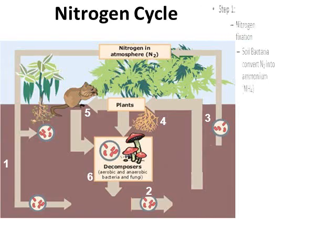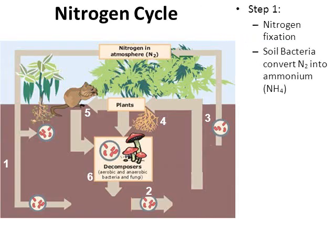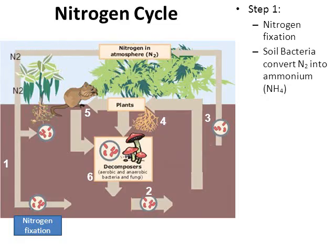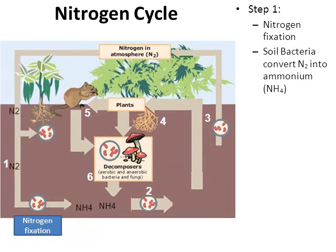Let's go ahead and look at the cycle now. Step one — I broke this down into six different areas in the picture. In area one, step one, bacteria are going to do a process called nitrogen fixation. In the animation, the bacteria are taking in atmospheric nitrogen, N2, from the atmosphere, and they're going to do the process called nitrogen fixation, converting the atmospheric nitrogen into ammonium. From the animation, you can see ammonium's formula is NH4. That right there is the first step — the process called nitrogen fixation.